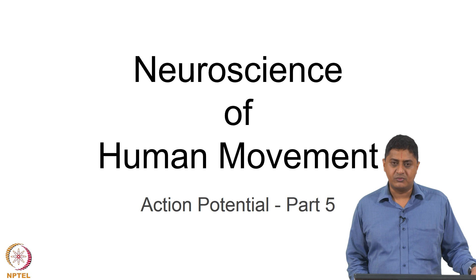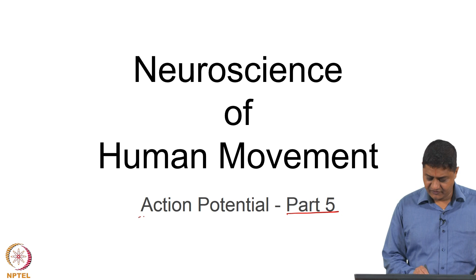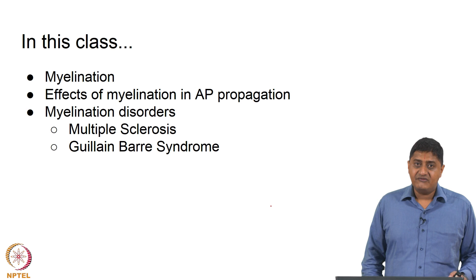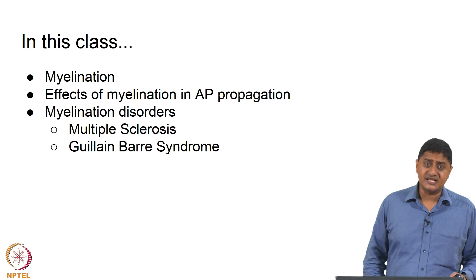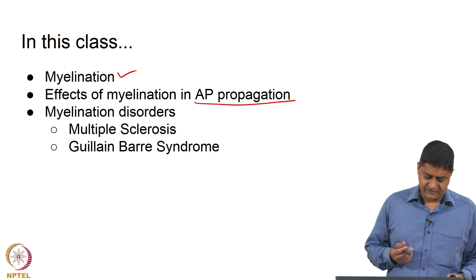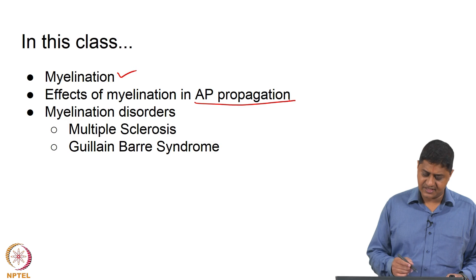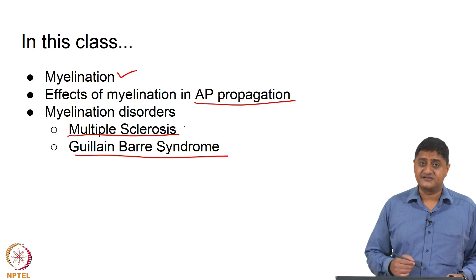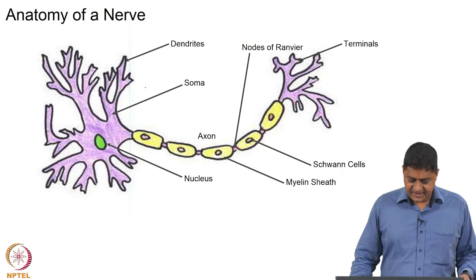Welcome to this class on the New Science of Human Movement. In this class we will be discussing myelination as part of our discussion on action potentials. We introduced myelination in the previous class and today we will discuss myelination and the effects of myelination in action potential propagation, and what happens if myelination is compromised — taking two examples: multiple sclerosis and Guillain-Barré syndrome.